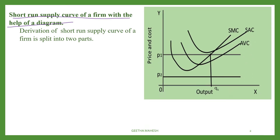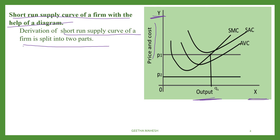In the diagram, on the x-axis, output is measured, and on the y-axis, price and cost are measured. The derivation of the short-run supply curve of a firm is split into two parts.